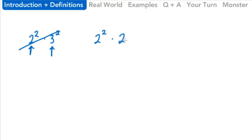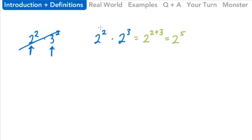But if we have a case where we have 2 to some power and we're multiplying by 2 to another power — it could even be the same power, like 2 squared times 2 squared — there's a very quick rule, which is to add the exponents. So jumping straight to the answer: 2 to the 2 plus 3, which equals 2 to the 5th power. Our answer to 2 squared times 2 cubed is 2 to the 5th power.